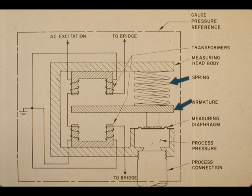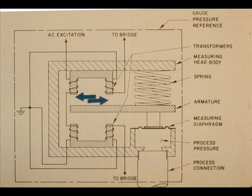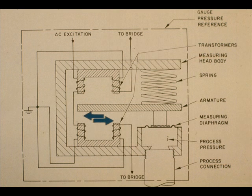Pressure on the diaphragm compresses the spring and moves the armature. This decreases the air gap in one transformer and increases the air gap in the other. From here, the operation of the Veritrac 56p is identical to the 56dp model for differential pressure.